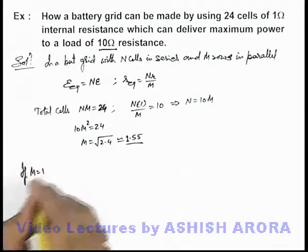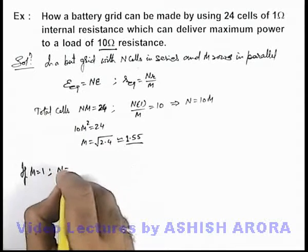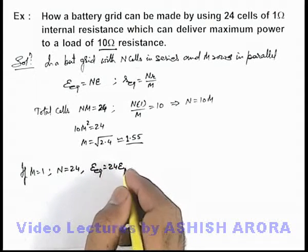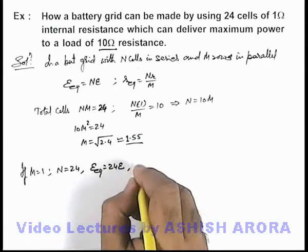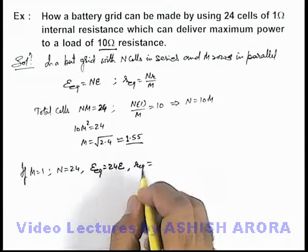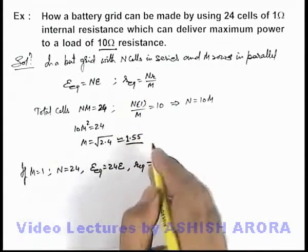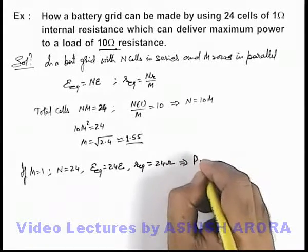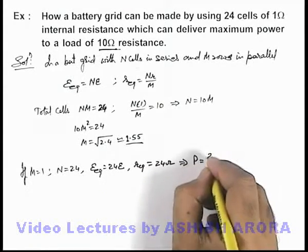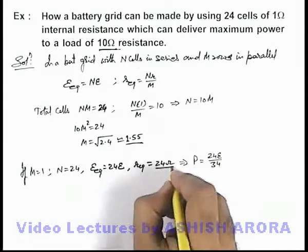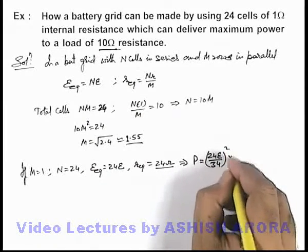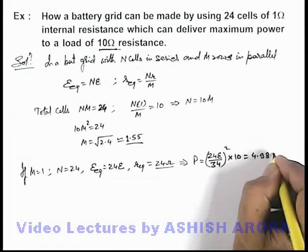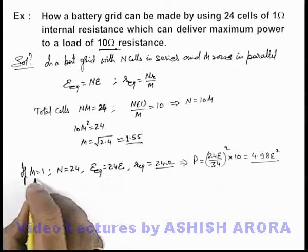For m = 1, the value of n will be 24. The equivalent EMF will be 24E, and the equivalent internal resistance will be 24 ohms (since n = 24, m = 1). With an external resistance of 10 ohms, the power consumed is I²R where the current is 24E/34, because 24 ohms is in series with 10 ohms. Simplifying gives a power of 4.98E².